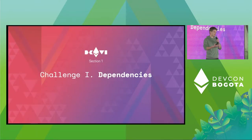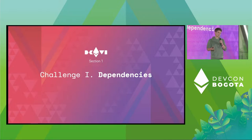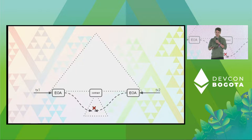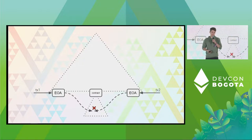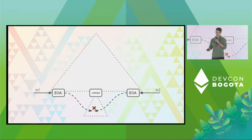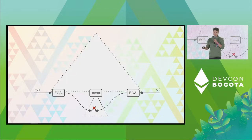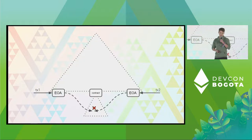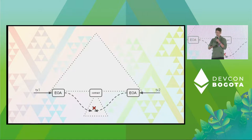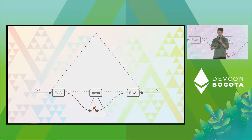What we found, and what I want to talk about today, are two challenges that we identified. The first of those is transaction dependencies. Basically, we have a global shared state which is the state tree, and theoretically a transaction could access any entry in this state tree. So for instance, if we have two transactions from two different accounts and both of them call the same contract, and that contract reads or writes the same entry, then these transactions will have a conflict or a dependency.